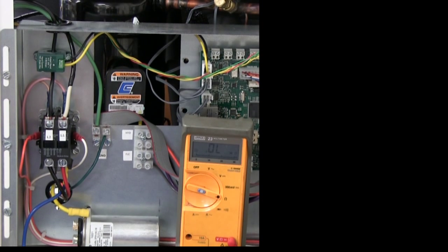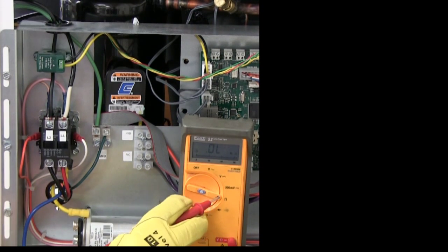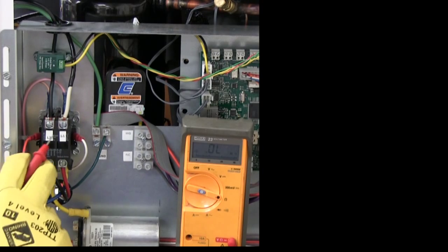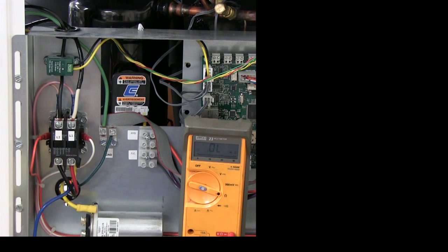In order to test the run capacitor, we'll use a multimeter set to the resistance function. The important key is to make sure that power is disconnected from the unit. I've already done so, checking to make sure there's no voltage between L1 and L2.